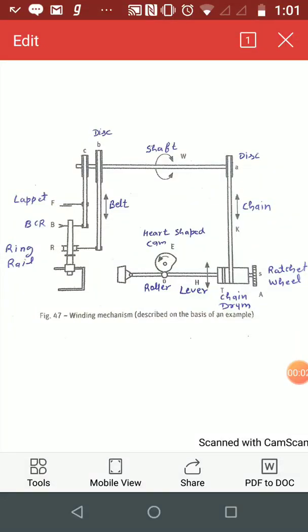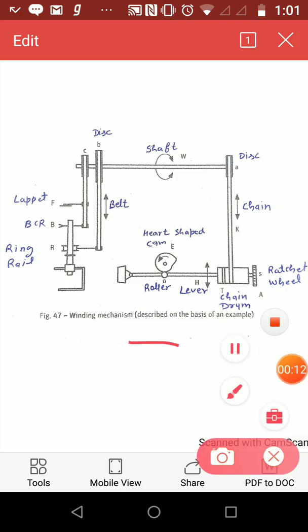In the series of lectures on ring frame, my next lecture is about builder motion. This diagram shows the builder motion in which the ring is suspended by the belt from a disk B mounted on a shaft W.